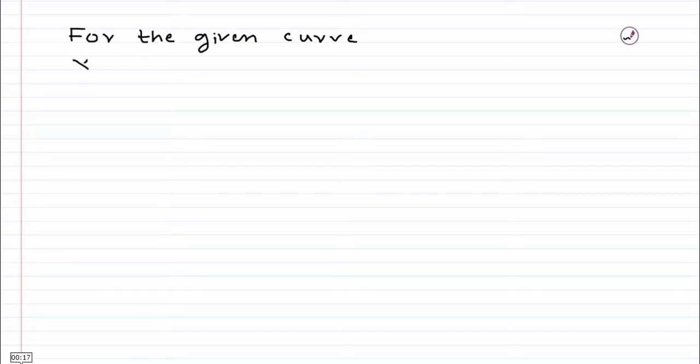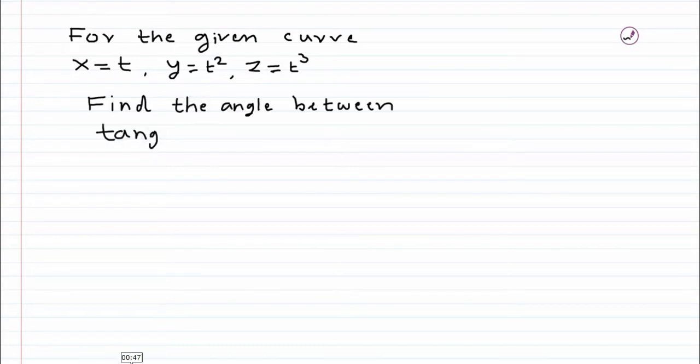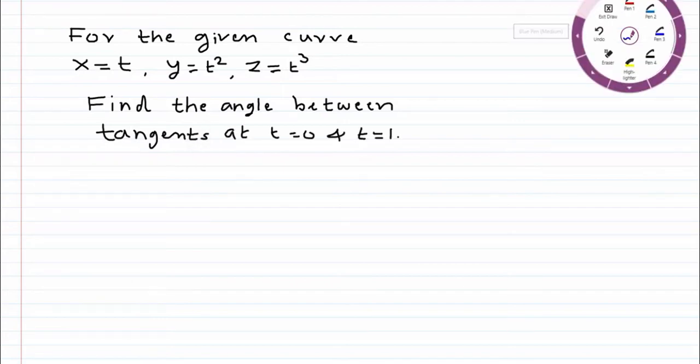Now here we have to find out the angle between the two tangents. The curve given is having the coordinates x equals t, y equals t square, and z equals t cube. We have to find out the angle between the two tangents at t equals 0 and t equals 1.